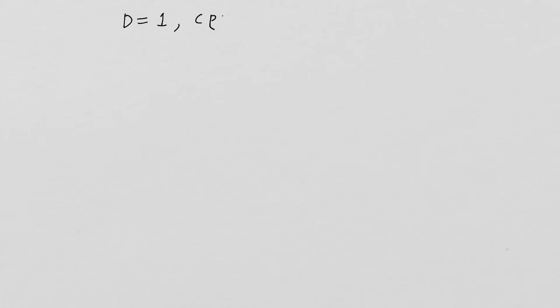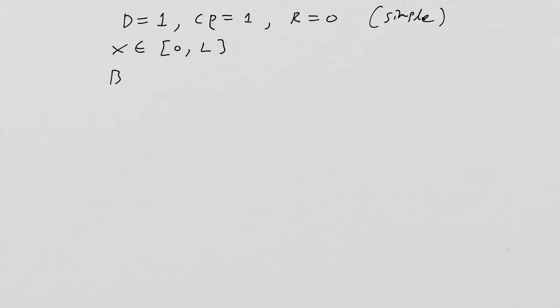Let's start with a specific example. We'll make this as simple as possible: d equals one, c times rho equals one, and r equals zero. The domain is zero to L, and the boundary conditions are fixed temperature: u at zero equals T₀ and u at L equals T_L.